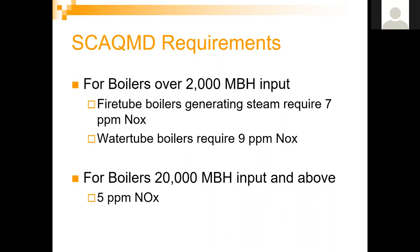Water tube boilers over 2,000 MBH but below 20 million BTUs are still at 9 PPM NOx. For boilers over 20 million BTUs per hour input, the air district now requires sub-5 PPM NOx. We can meet this today even with traditional burner technology if there's a large enough boiler with a large enough furnace — not necessarily requiring an SCR system, though selective catalytic reduction is another option. A guaranteed 5 PPM NOx doesn't leave much room for forgiveness, requiring very precise combustion setup.